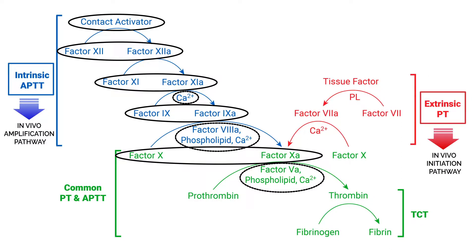You're never going to generate thrombin without activation of the initiation pathway, which gets activated by endothelial damage. Otherwise, that's pathological — we shouldn't be generating clots without endothelial damage. In vivo, the amplification pathway leads to a lot of positive feedback and communication back from the extrinsic and common pathway to the amplification pathway, cycling through the activation of factor XIa, which is ultimately responsible for a big thrombin burst.